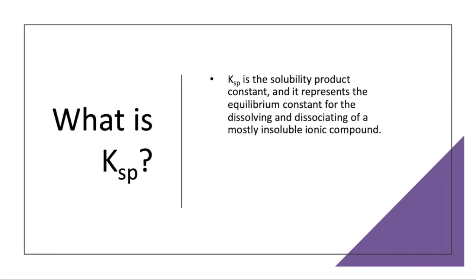So the first question is what is KSP? KSP is the solubility product constant, and it represents the equilibrium constant for dissolving and dissociating of a mostly insoluble ionic compound. So if I have an ionic compound MX,